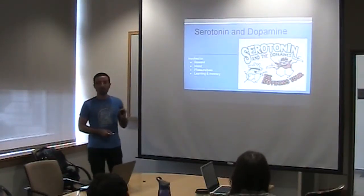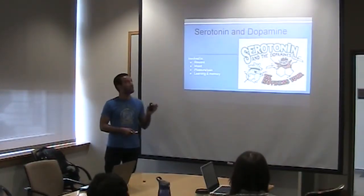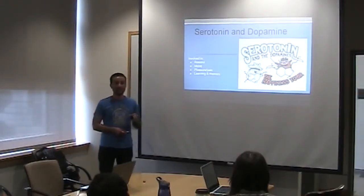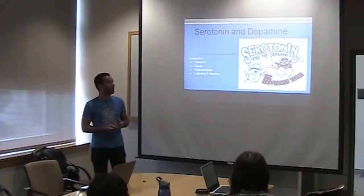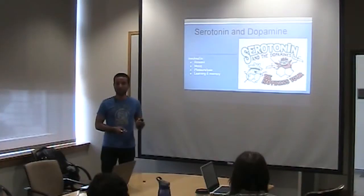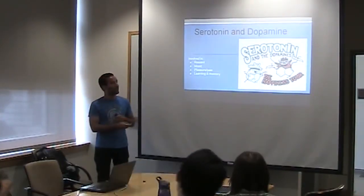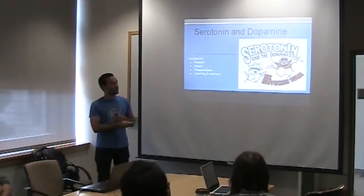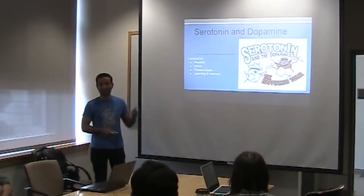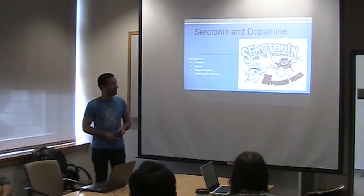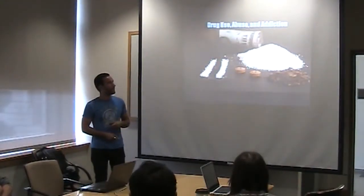Two neurotransmitters that are important for the drugs we're going to talk about are serotonin and dopamine. These are very important for mood, reward, pleasure, and even learning and memory. Every single day you're using serotonin and dopamine. And if you haven't noticed, these are the molecular structures over here in the shapes of the guitar and drums they're playing - just a cool picture I wanted to show.